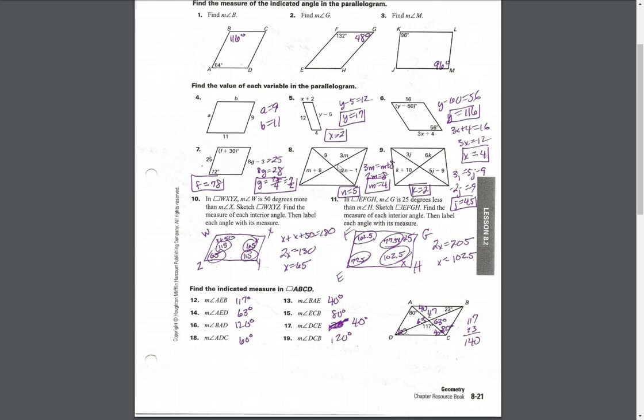Number 8: the diagonals bisect each other, so set these equal: 9 equals 2n minus 1, m plus 8 equals 3m. Same thing with 9: 3j equals 5j minus 9, 6k equals k plus 10.